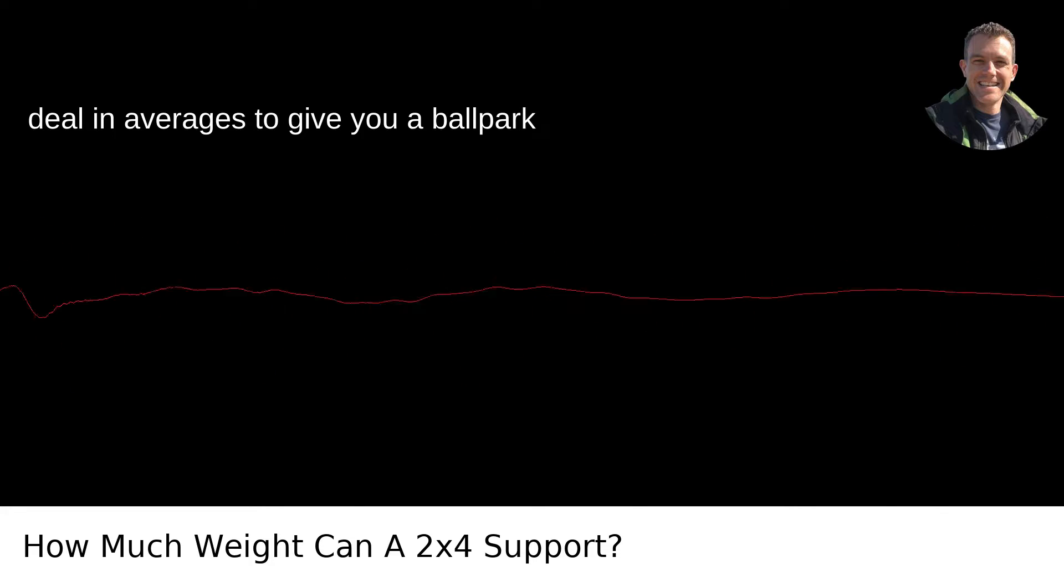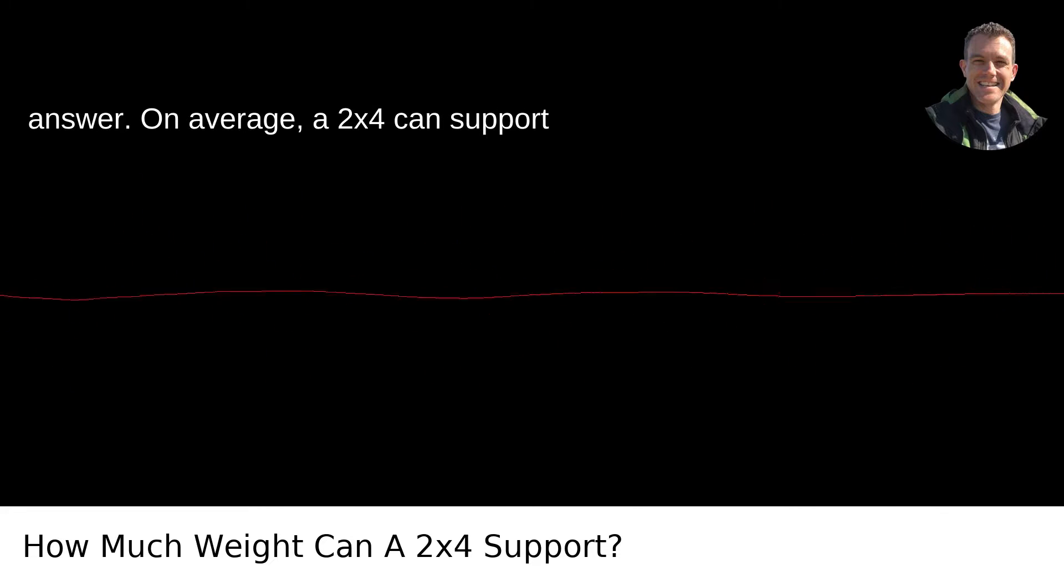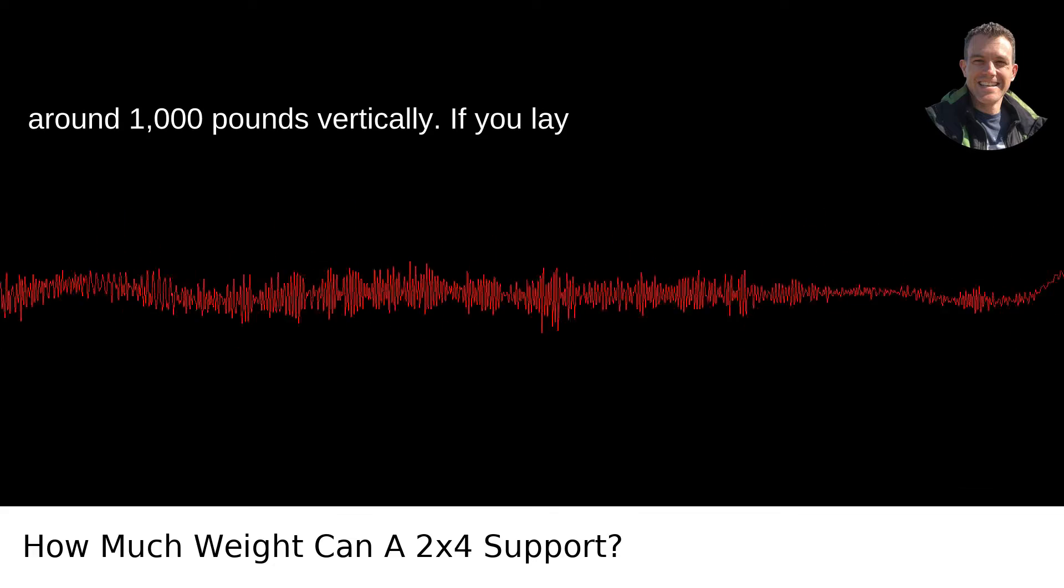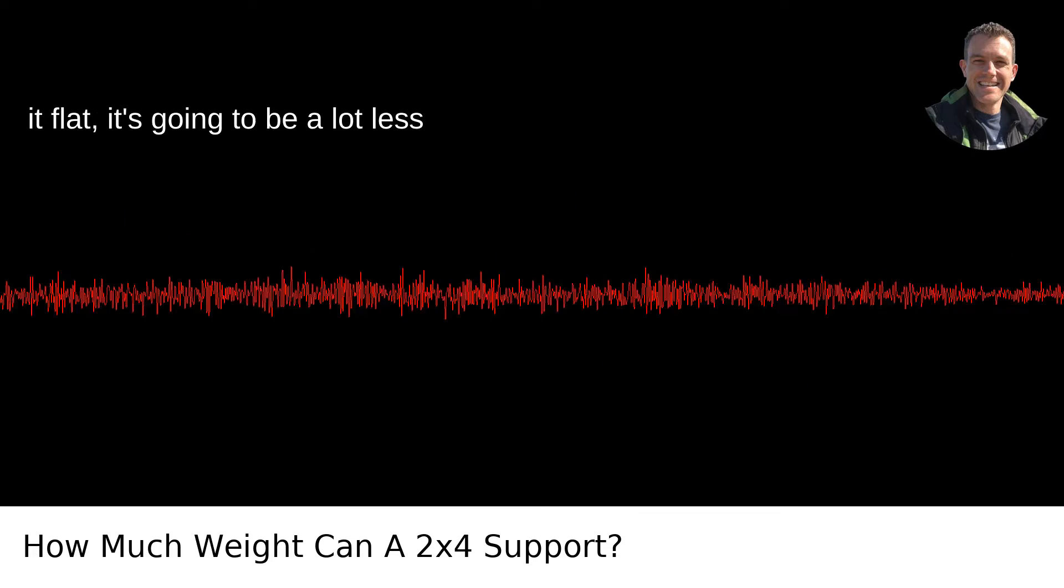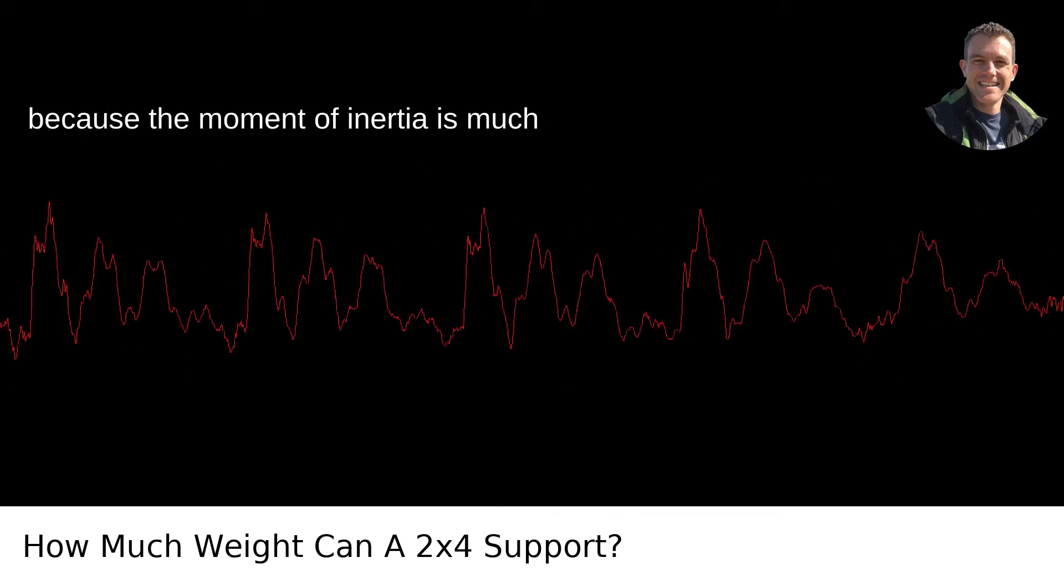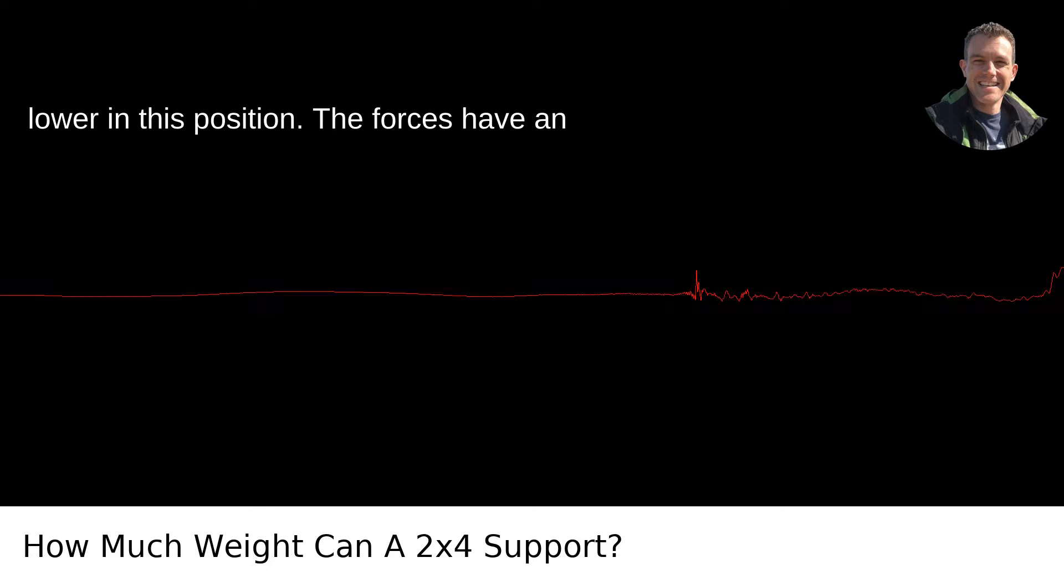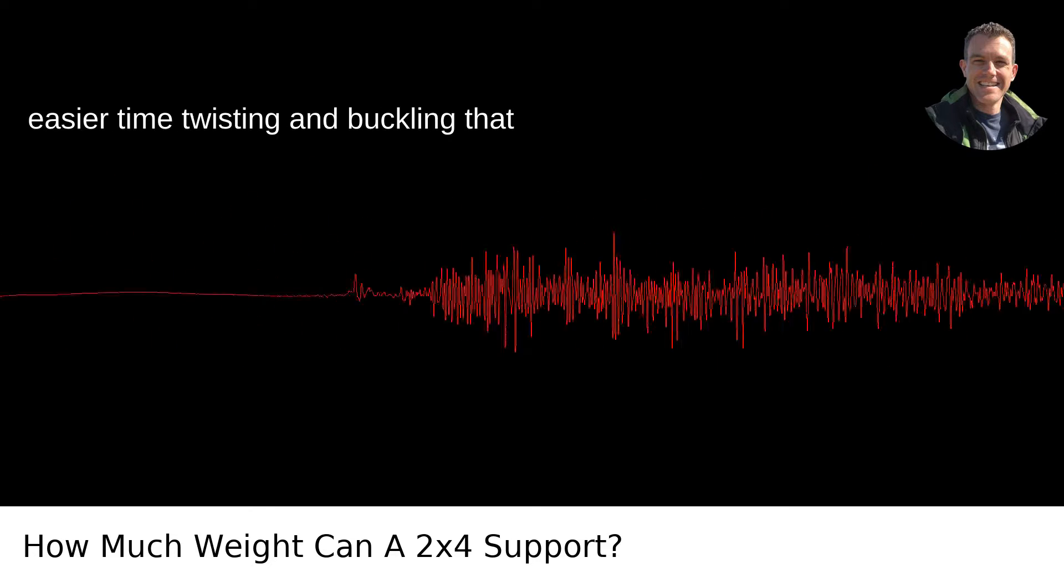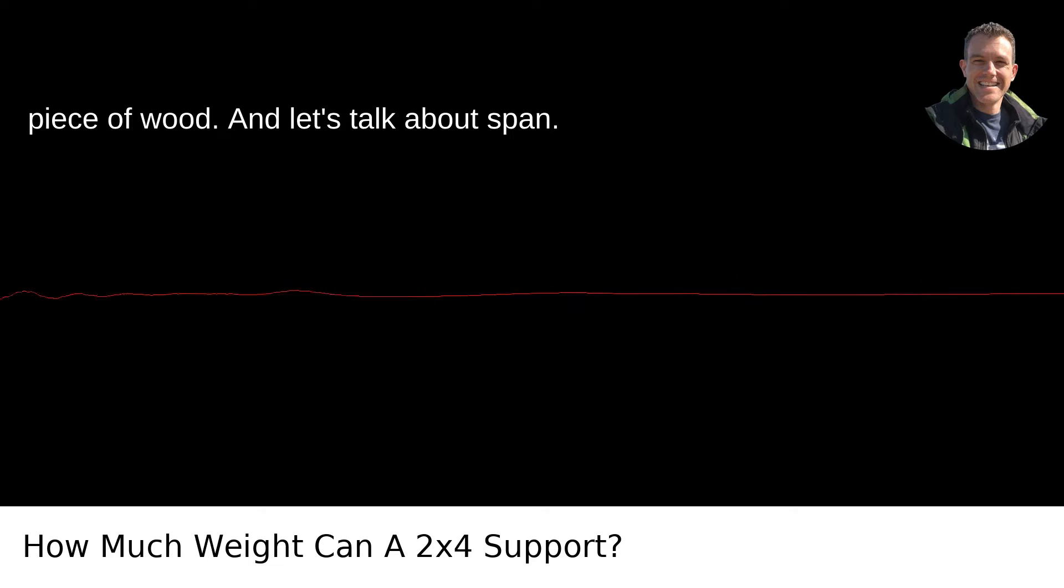Let's deal in averages to give you a ballpark answer. On average, a 2x4 can support around 1,000 pounds vertically. If you lay it flat, it's going to be a lot less because the moment of inertia is much lower in this position.